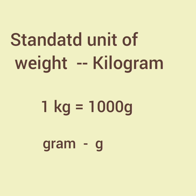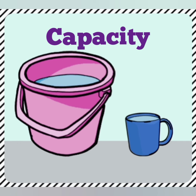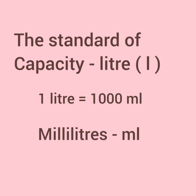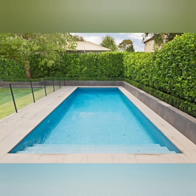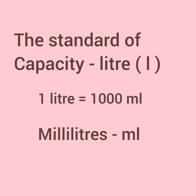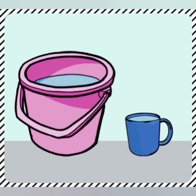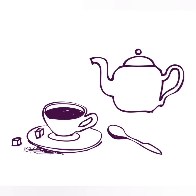Now coming to capacity. Capacity is the measure of the amount of liquid a container can hold. The standard unit of measuring capacity is liter. Smaller quantities are measured in milliliters and larger quantities are measured in liters. 1 liter is equal to 1000 milliliters. For example, a bucket can hold 3 or 4 liters of water and a mug will hold 500 milliliters of water. You can see the difference between a teacup and a kettle — a teacup holds a little and a kettle can hold more.